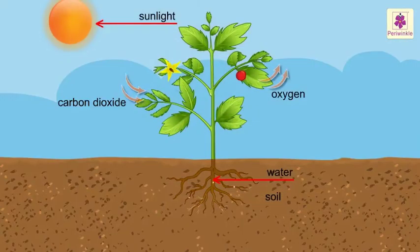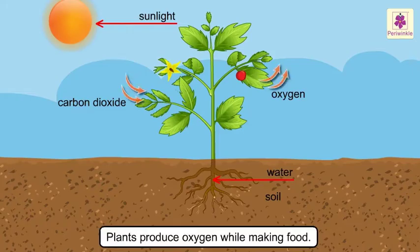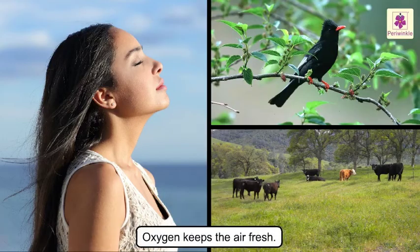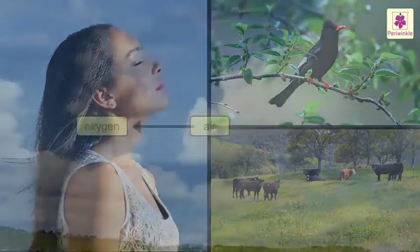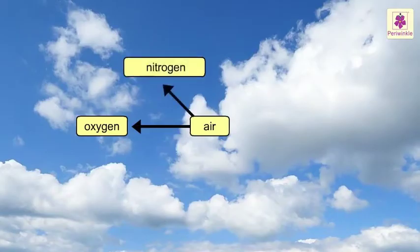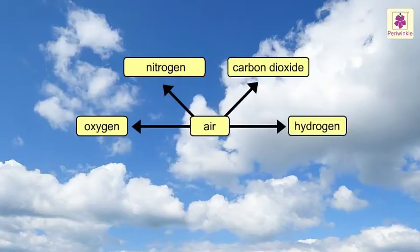One of the reasons why plants are so important to us is because they produce oxygen while making food. Oxygen is the most important gas for all living things as it is needed to stay alive. It also keeps the air fresh. Along with oxygen, air also contains other gases like nitrogen, carbon dioxide and hydrogen.